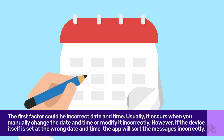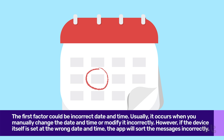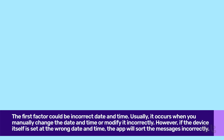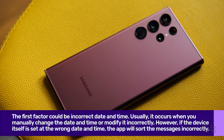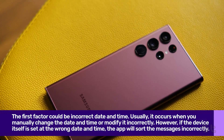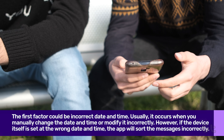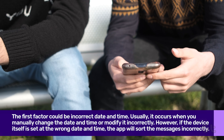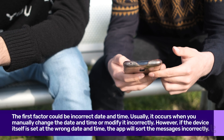The biggest factor behind the wrong order of messages in Samsung phones is the incorrect date and time. Usually, it occurs when you manually change the date and time, or modify it incorrectly. However, if the device is set at the wrong date and time, the messaging app will sort the messages incorrectly.